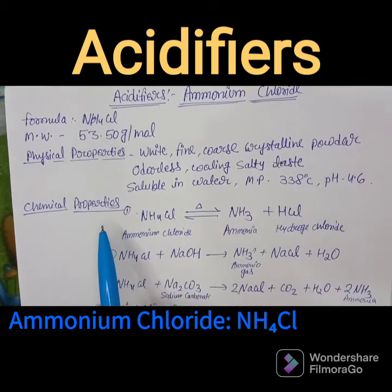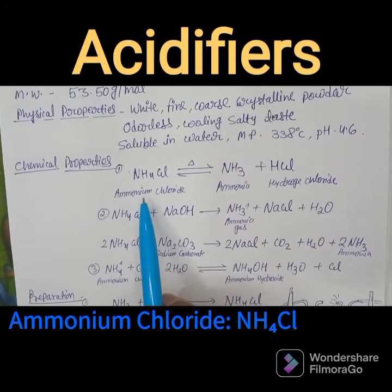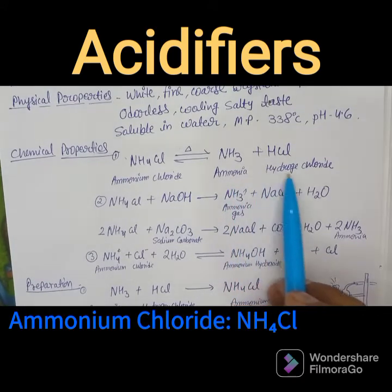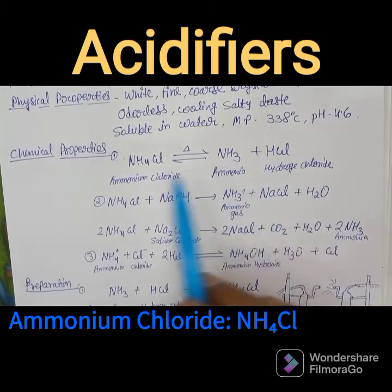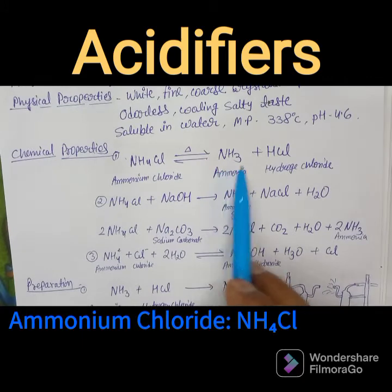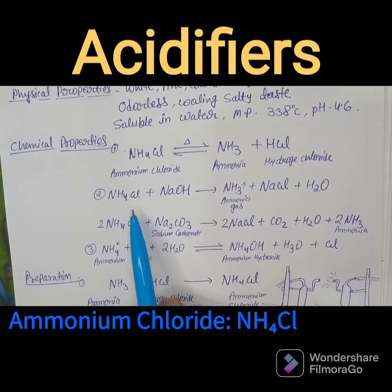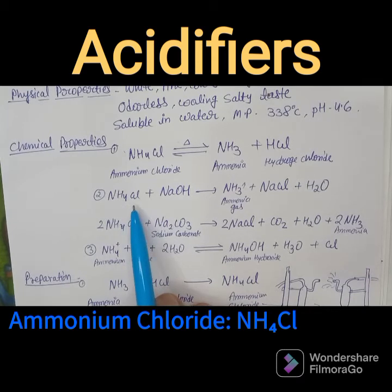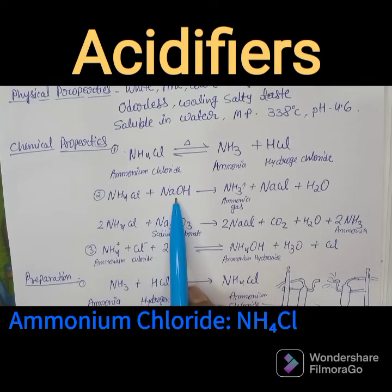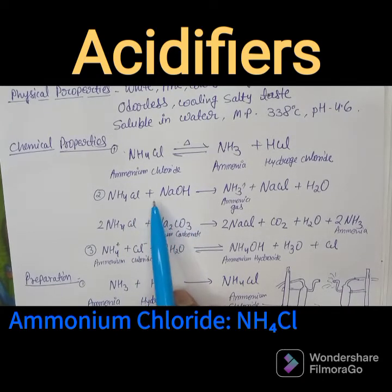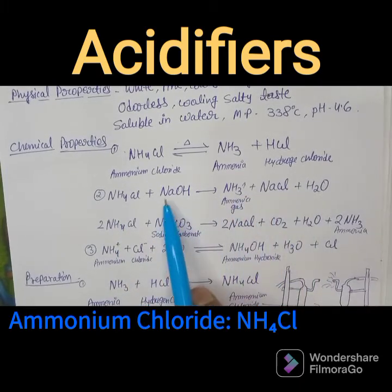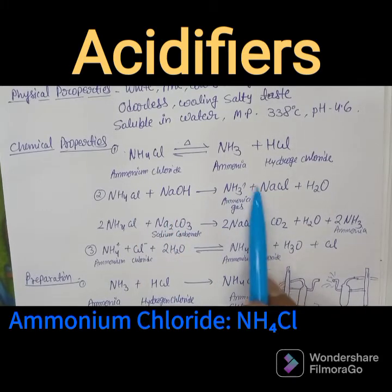Regarding chemical properties of ammonium chloride: when heated, it releases ammonia and hydrogen chloride — NH₄Cl → NH₃ + HCl. In a second reaction, NH₄Cl reacts with sodium hydroxide to form ammonia (NH₃), water, and sodium chloride (NaCl).